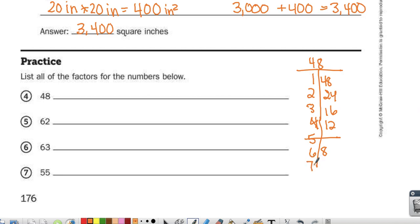7 is not a factor because 7 times 7 is 49. So my factors are 1, 2, 3, 6, 8, 12, 16, 24, 48.